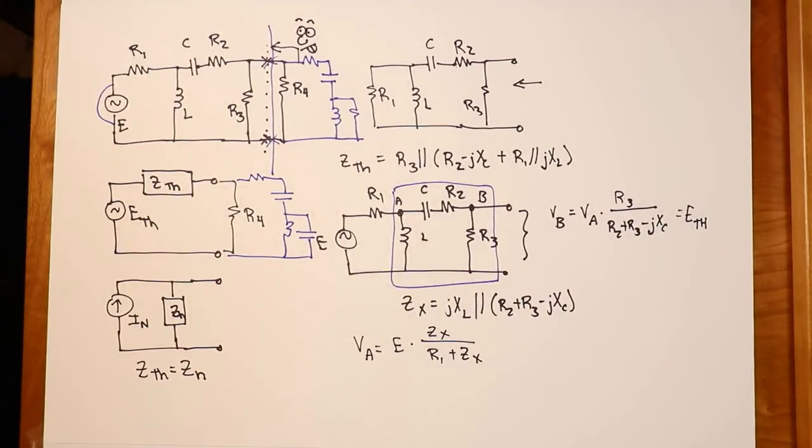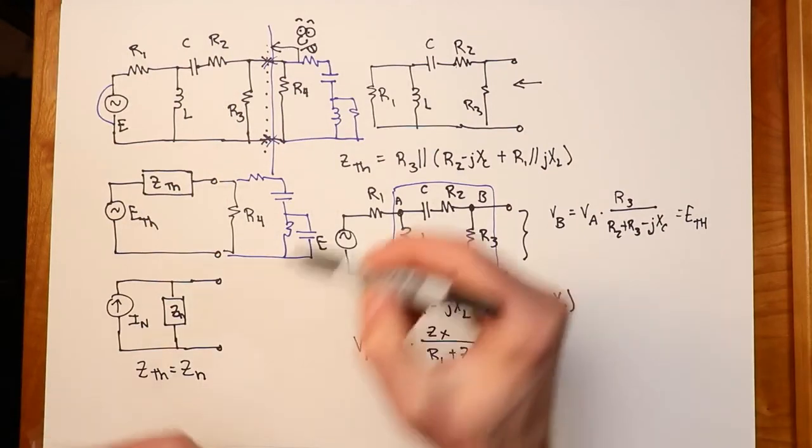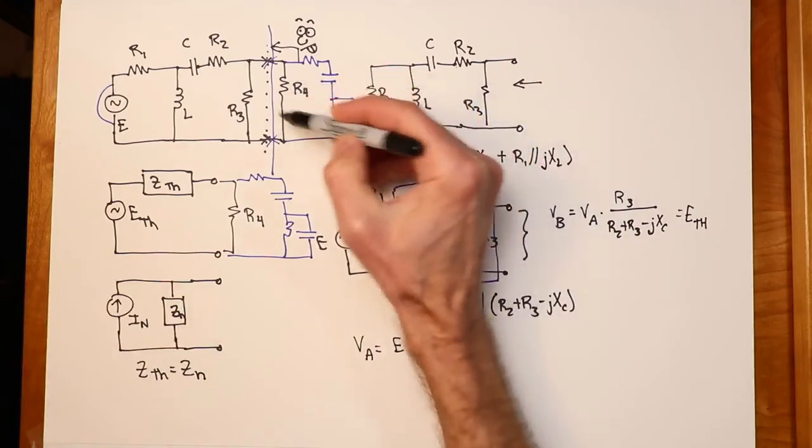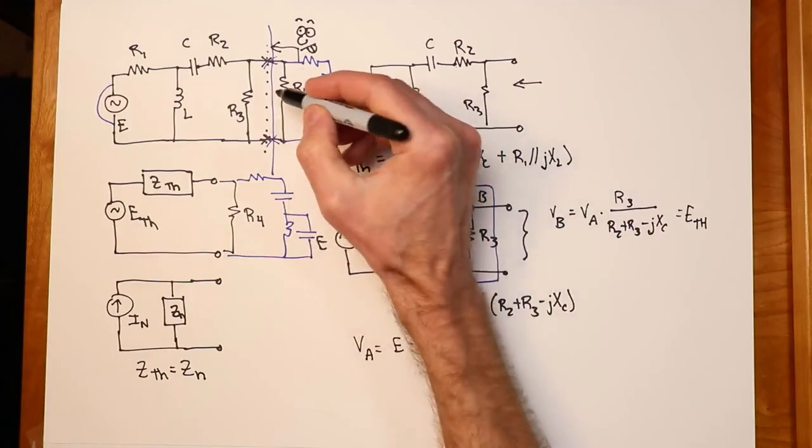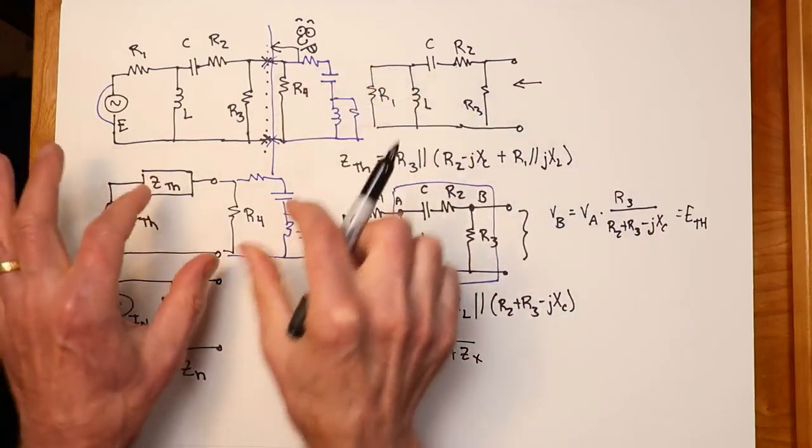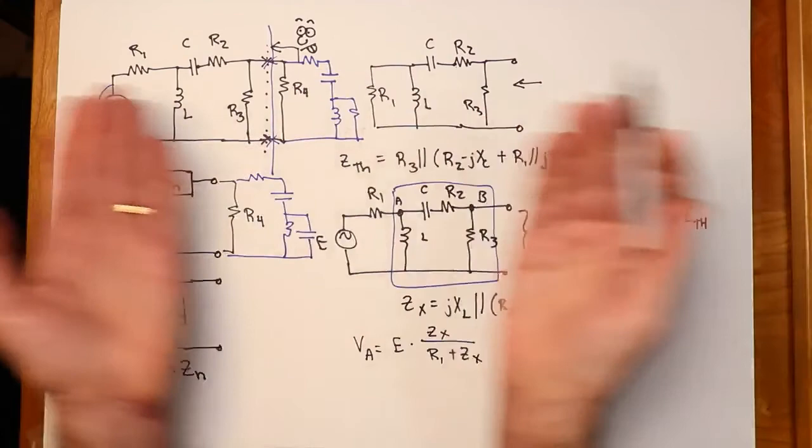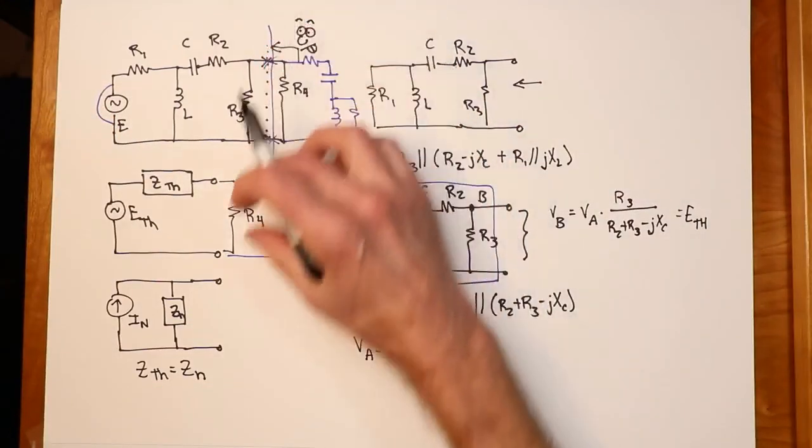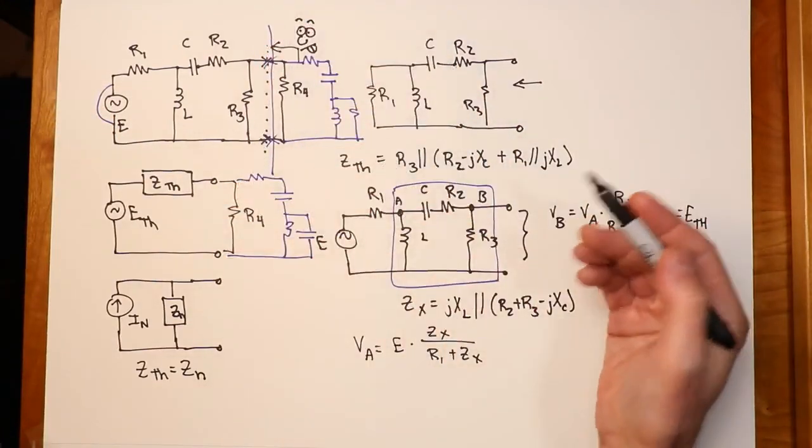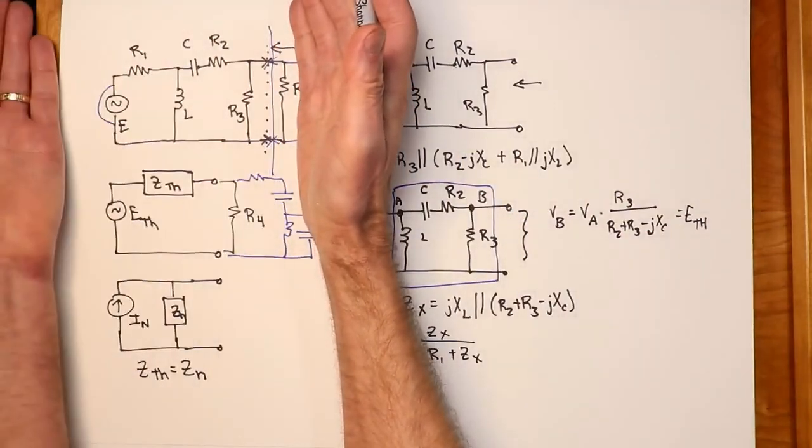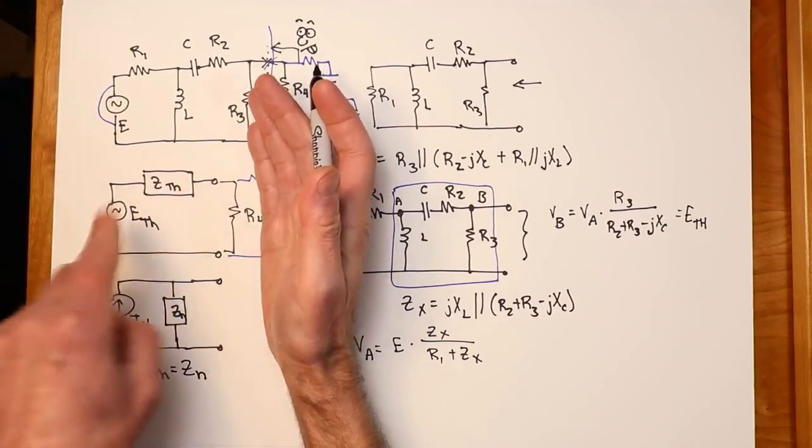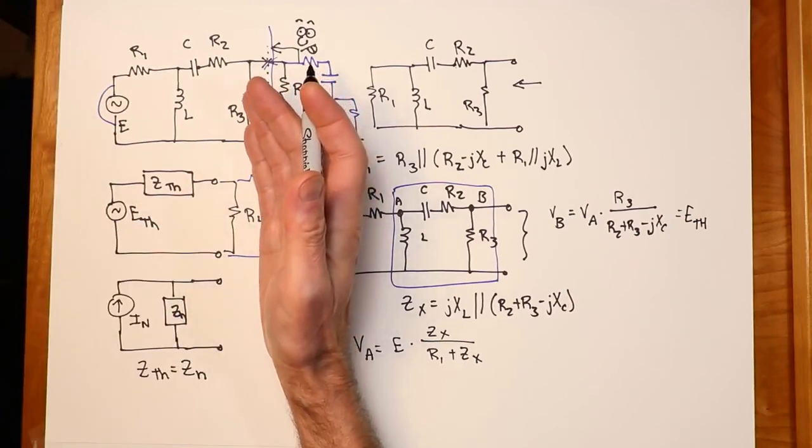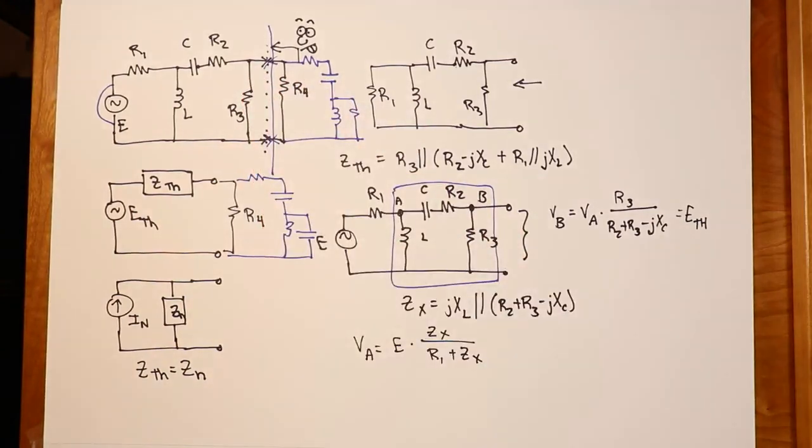And as I said, this is very handy in that we can now sort of play little what-if games with the value of R4 or these other components. It will be much easier in the case of R4 to just, for example, the load of an amplifier, let's say. You can just sort of play with that very simply. Which would you rather analyze? This thing or this thing? You're going to sit there and monkey with values of R4. This is going to be much quicker. It'll be much more obvious to see what's happening.